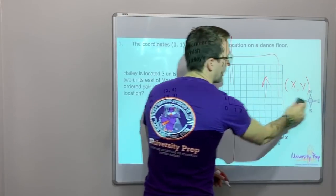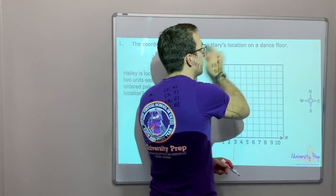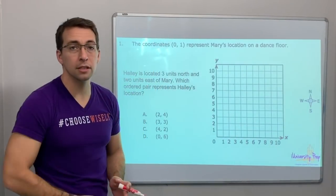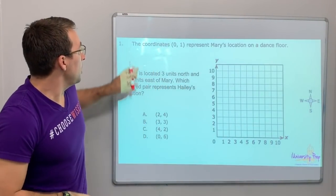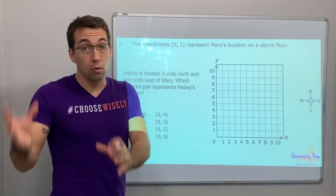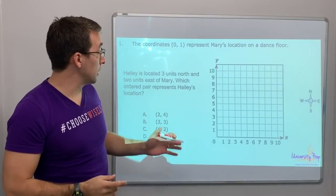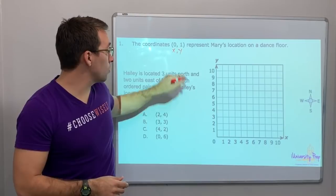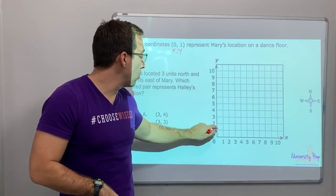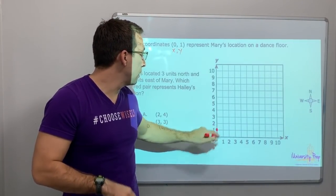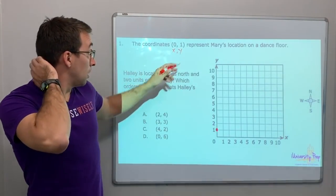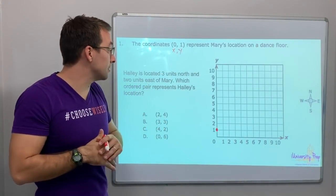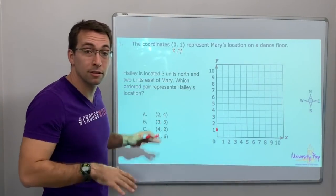So we have six questions — I think we're going to do two videos for this topic. Six questions total. The coordinates 0, 1 — this is our x, this is our y. We're on 0, 1. That represents Mary's location on the dance floor.